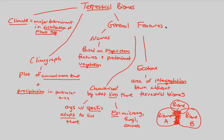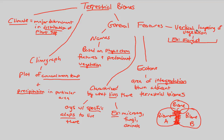Another important characteristic of the terrestrial biome is the vertical layering of vegetation — how plants are layered from below the ground all the way to the top of the highest trees. A good example is a generic forest. Going from top to bottom, the first vertical layer is the canopy level at the very top of the forest.